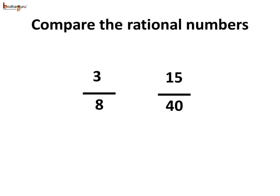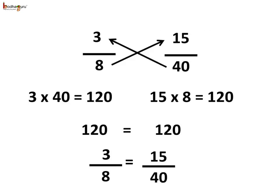Now let us compare the rational numbers 3 by 8 and 15 by 40. We do the cross multiplication: 3 multiplied by 40 is equal to 120, and 15 multiplied by 8 is also equal to 120. Since 120 equals 120, we can say 3 by 8 is equal to 15 by 40, and thus these two numbers are equivalent rational numbers.